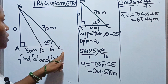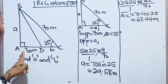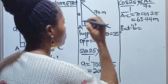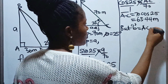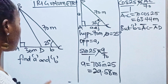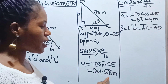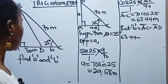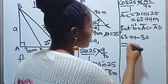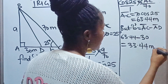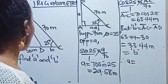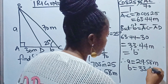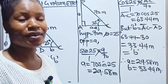So from A to C is 63.44 meters. We are not looking for AC — we are looking for DC, which is b. So b = AC − AD = 63.44 − 30 = 33.44 meters. Therefore, a = 29.58 meters and b = 33.44 meters. Thank you so much for watching — have a lovely day!